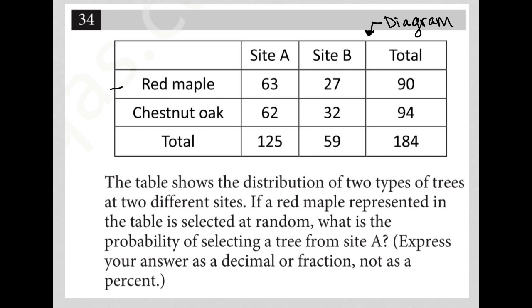Looks like we have different types of trees - red maple, chestnut oak - and two different sites, site A and site B. I'm assuming these are the numbers of those different types of trees in each site, and then some total values, an overall total.